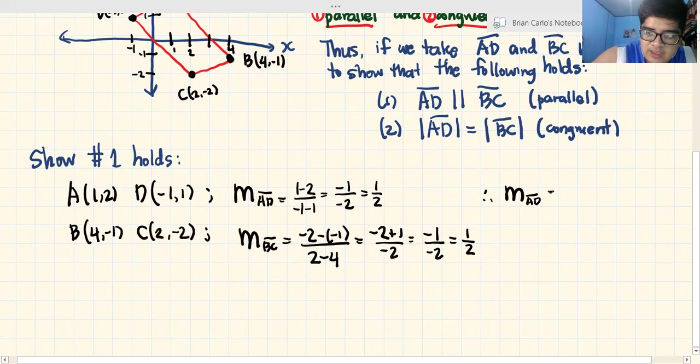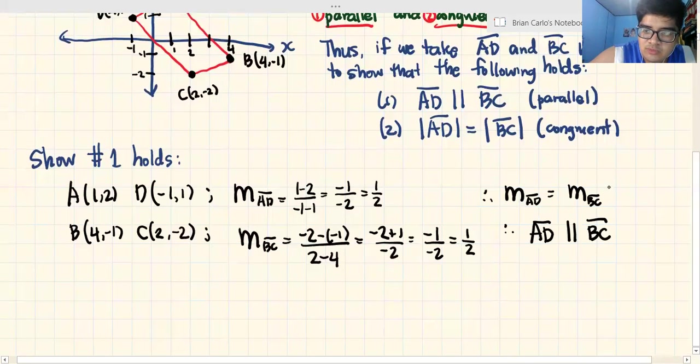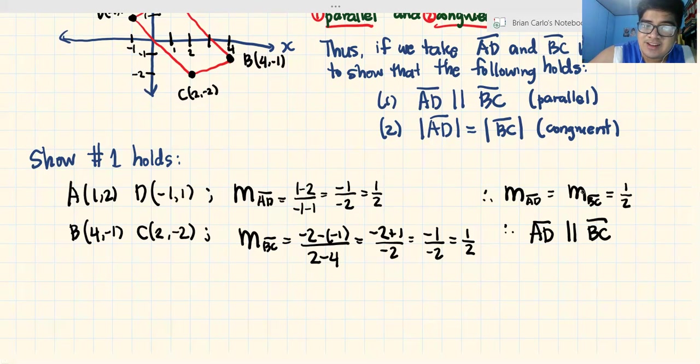And alas, therefore yung slope ng AD ay equal sa slope ng BC, which is equal to 1/2. Ibig sabihin nun, yung segment AD is indeed parallel to segment BC.